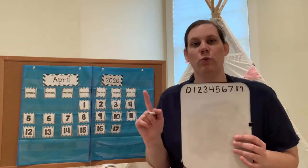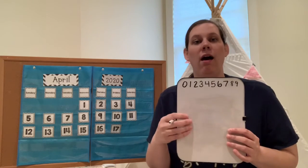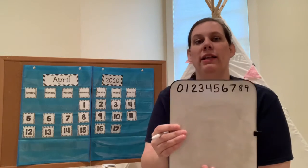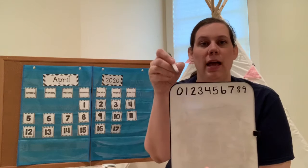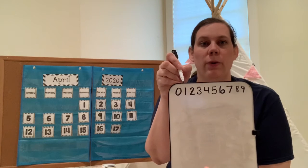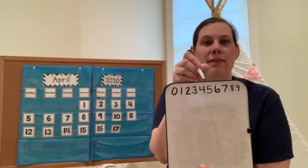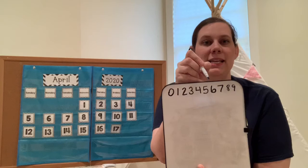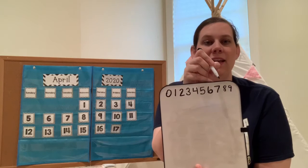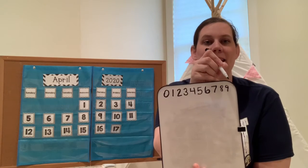All right guys, we added three new numbers this week. We're going to go through our number line and then practice writing each of those numbers one more time on the board and in the sky. Let's start with our number line: 0, 1, 2, 3, 4, 5, 6, 7, 8, 9.